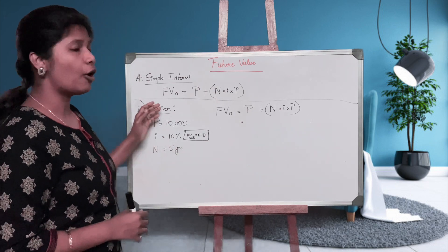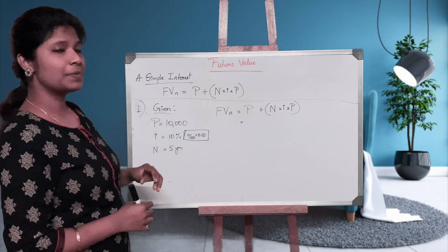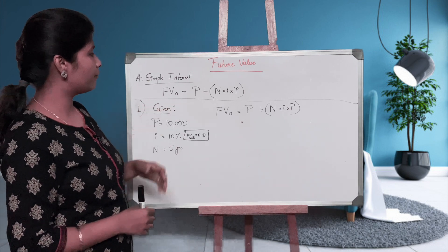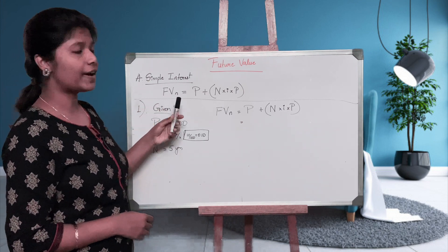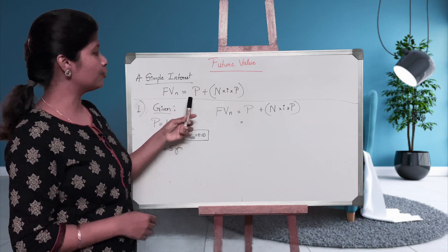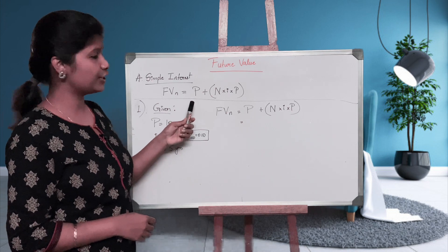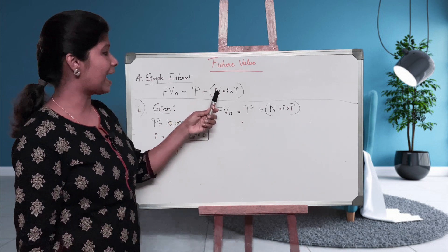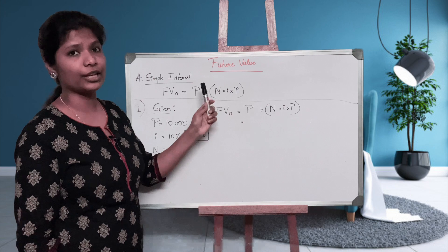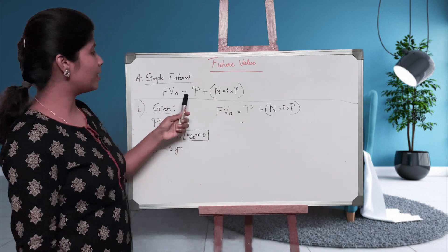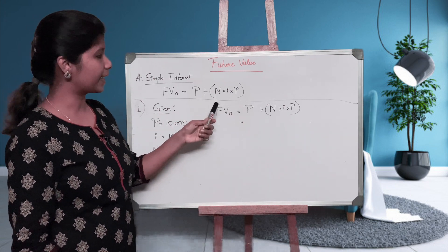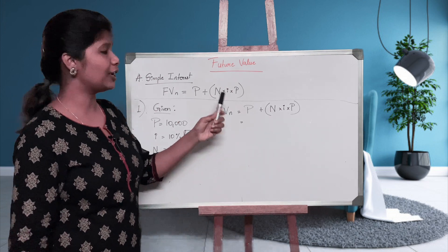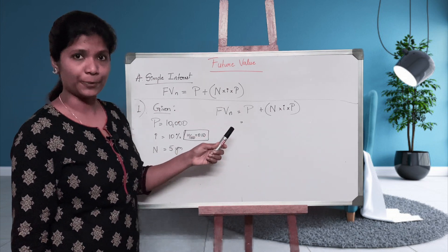The first part of future value is calculating simple interest. The formula is: Future Value equals Principal, where P stands for principal, N stands for number of years or time period, and I stands for rate of interest. So the formula is: P plus, in brackets, N into I into P.